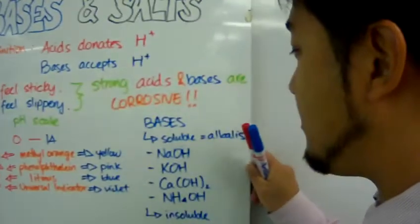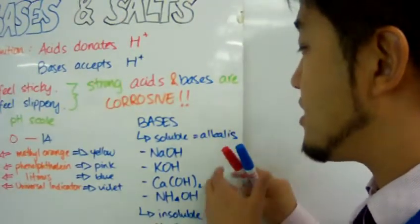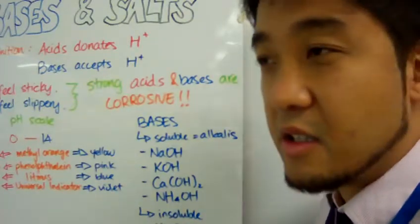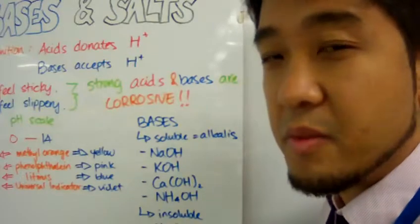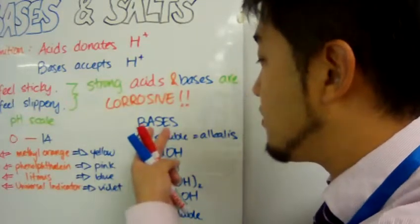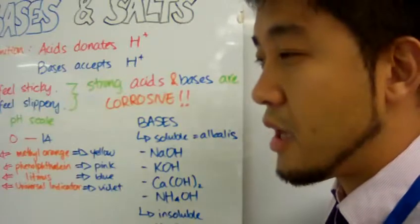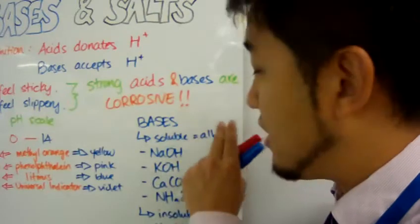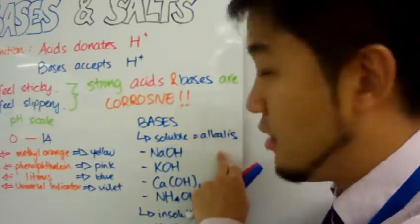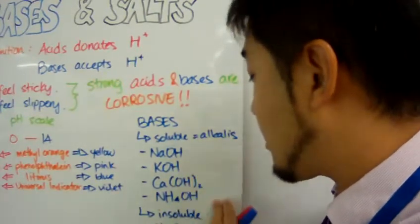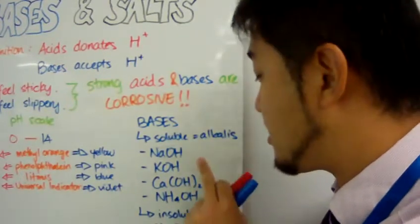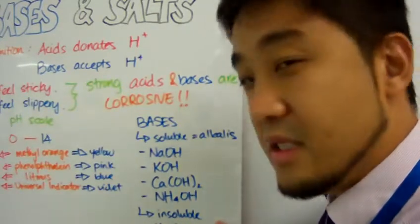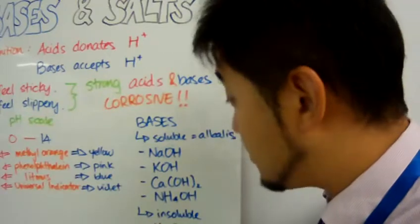Let's move on to bases. Bases can be divided into soluble bases and insoluble bases. When you put a base into water and it dissolves, we can say that base has become an alkaline. Examples of alkalines include sodium hydroxide, potassium hydroxide, calcium hydroxide, and ammonium hydroxide. Insoluble bases include magnesium oxide and calcium oxide.